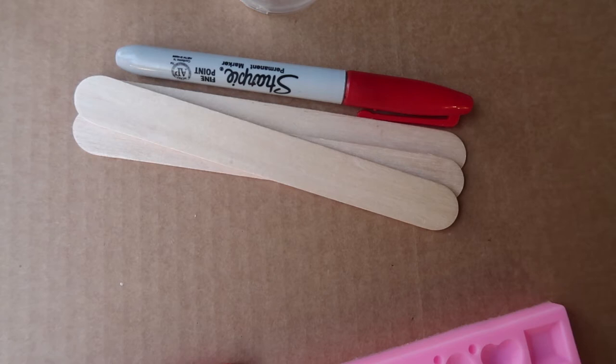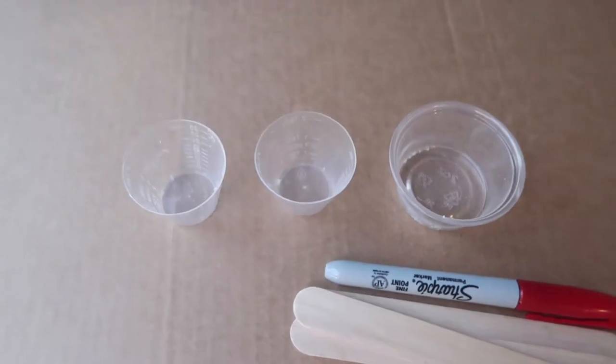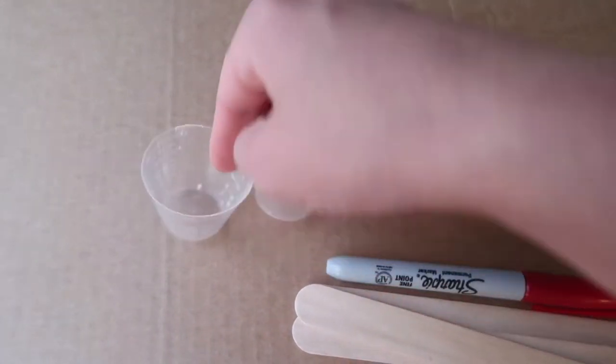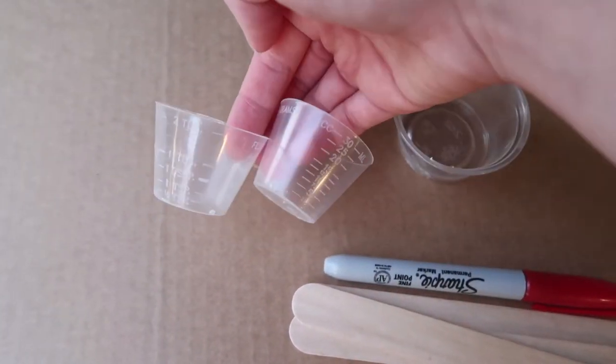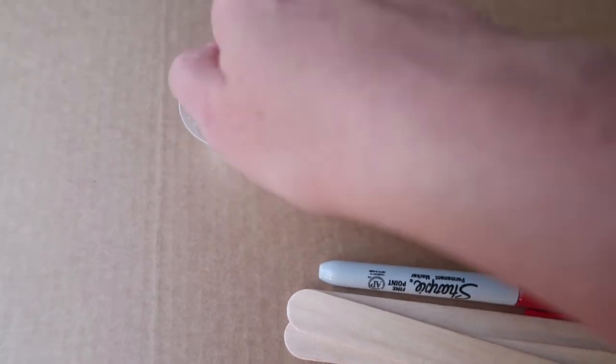Next, you need at least three popsicle sticks and a way to mark the popsicle sticks A, B, and C. Then you will need three disposable cups. I have two medicine cups with measurements on the side so I can properly measure out the resin.